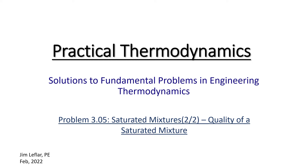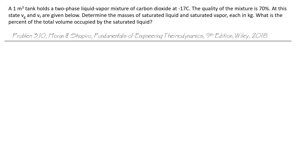Let's look at another problem using the quality of a saturated mixture to find certain properties of that mixture. We have a one cubic meter tank which holds a two-phase liquid vapor mixture of carbon dioxide at minus 17 degrees C. The quality of the mixture is 70%. Vg and Vf are given, so we don't have to look those up in a table. We are asked to determine the masses of the saturated liquid and saturated vapor in kilograms, and also what percent of the total tank volume is occupied by the saturated liquid.